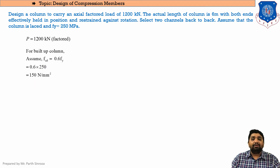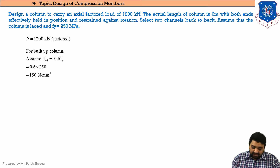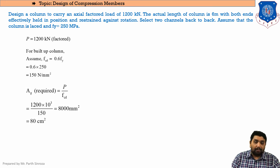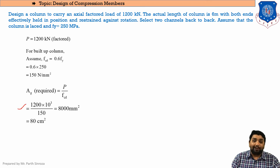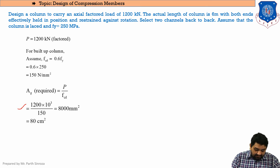The next step is to find the gross area AG using the stress equation σ = P/A, so A = P/σ. Load = 1200 kN = 1200 × 10³ N, divided by FCD = 150 N/mm², giving AG = 8000 mm² = 80 cm².